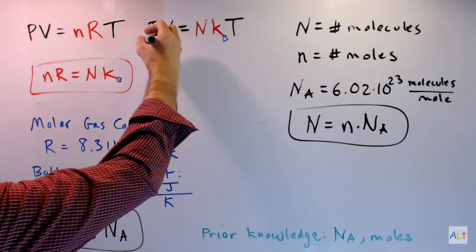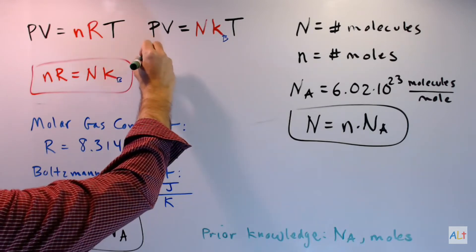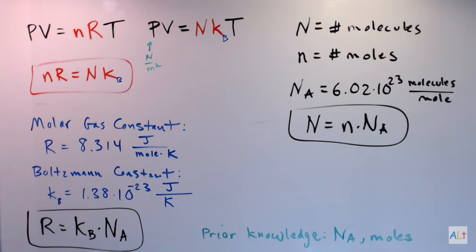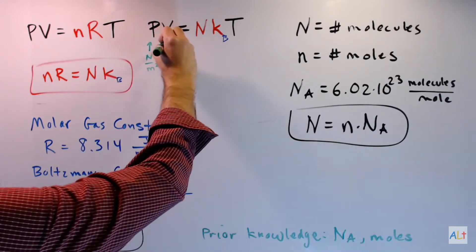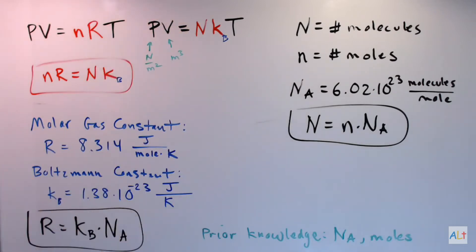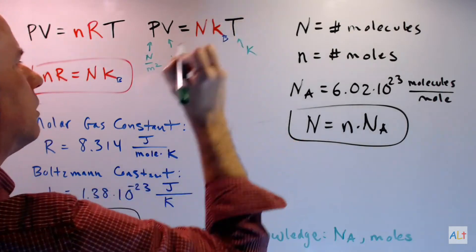P is for pressure. Pressure is measured in pascals, also known as newtons per square meter. That's force over area. Volume is measured in cubic meters. Those are the standard units for those two quantities.